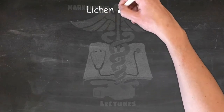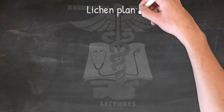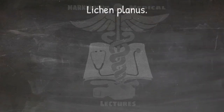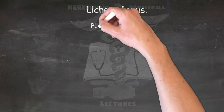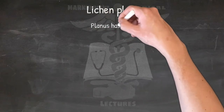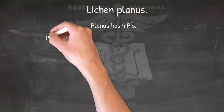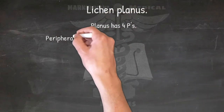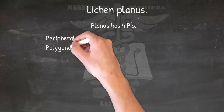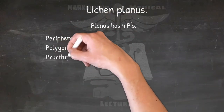Characteristics of lichen planus: a chronic inflammatory and immune-mediated disease that affects the skin, nails, hair, and mucous membranes. Planus has four P's — Peripheral, Polygonal, Pruritus, and Purple.